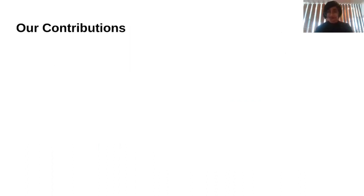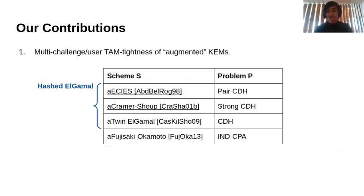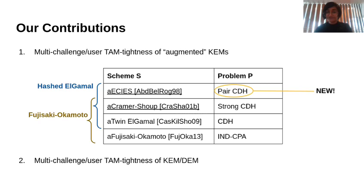Our contributions are the following. First, we give time-tight proofs for augmented versions of various Hashtag-Gamal CHEMs in a multi-user, multi-challenge setting. We also introduce a new Diffie-Hellman assumption for one of our groups, which we believe may be of independent interest. Additionally, we give time-tight proofs for augmented versions of the Fujisaki-Okamoto transformations. Finally, we lift our results for the CHEMs to time-tightly prove the security of PKE schemes in the CHEM-DEM paradigm. Please attend the full version of our talk and refer to the full version of our paper to see the details of our proof techniques and much more. Thank you.